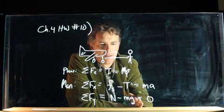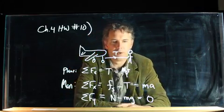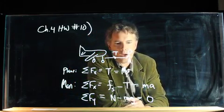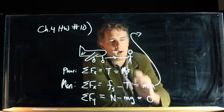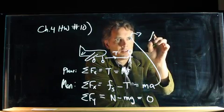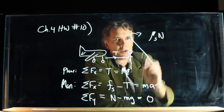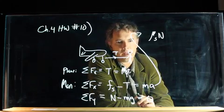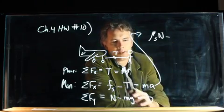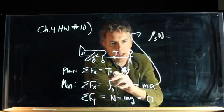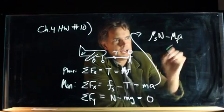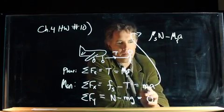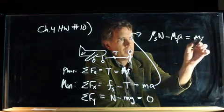Alright, so at this point we should be able to put this stuff together and solve it. We have this equation right here. That equation becomes what? Well, Fs we know is mu s times the normal force of the man, minus tension. But we know what tension is from the first equation. It's M of the plane times A. Both of those add up to M A.